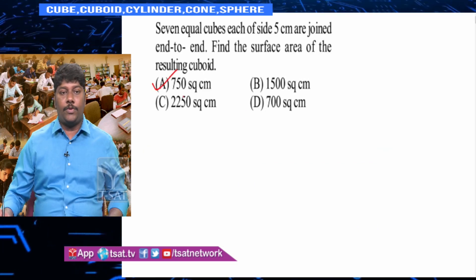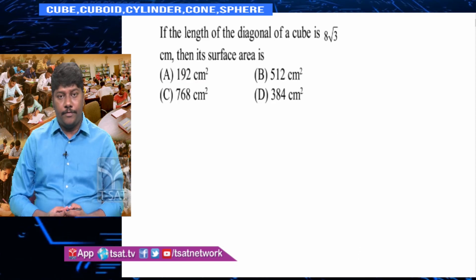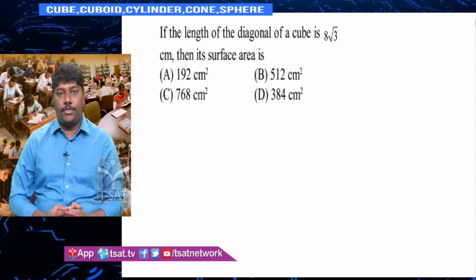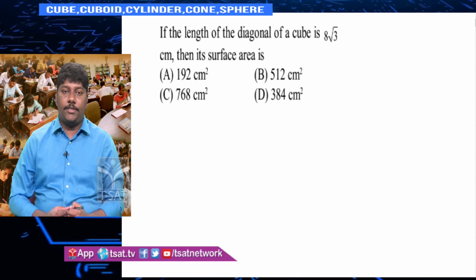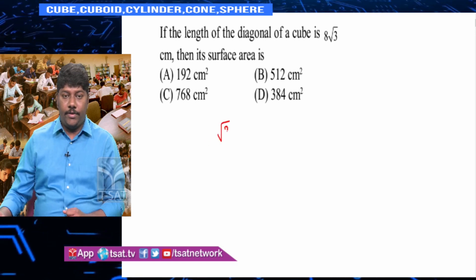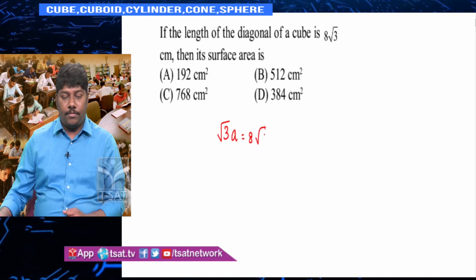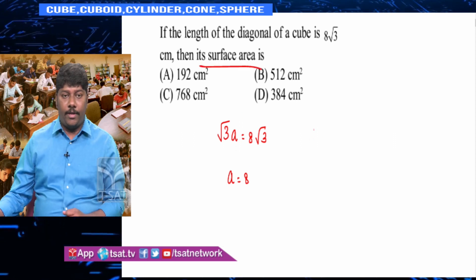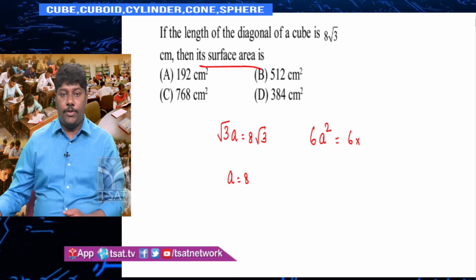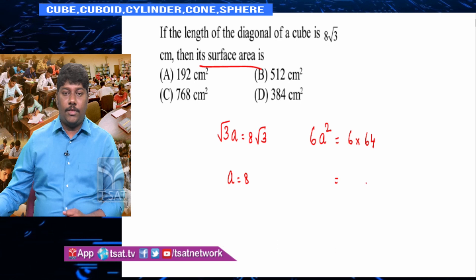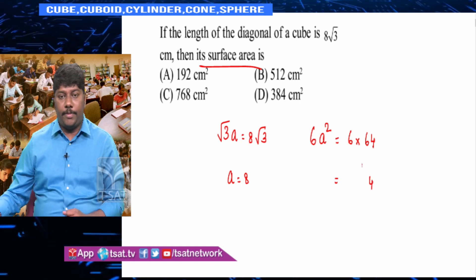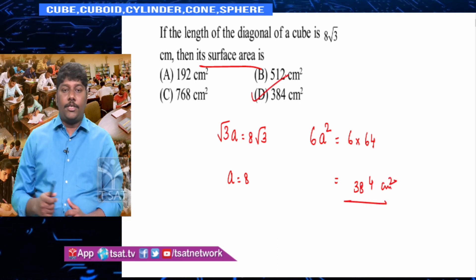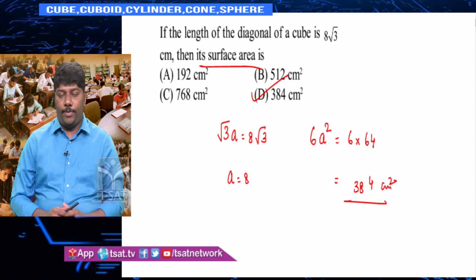So the answer is 750 cm². Next problem: if the length of the diagonal of the cube is 8√3, the diagonal formula is √3·a = diagonal. So √3·a = 8√3, thus a = 8. Surface area = 6a² = 6 × 64 = 384 cm².